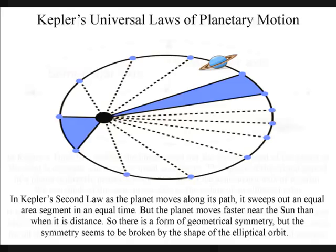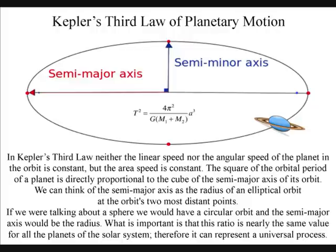In Kepler's third law neither the linear speed nor the angular speed of the planet in the orbit is constant, but the area speed is constant. The square of the orbital period of a planet is directly proportional to the cube of the semi-major axis of its orbit. We can think of the semi-major axis as the radius of an elliptical orbit at the orbit's two most distant points.